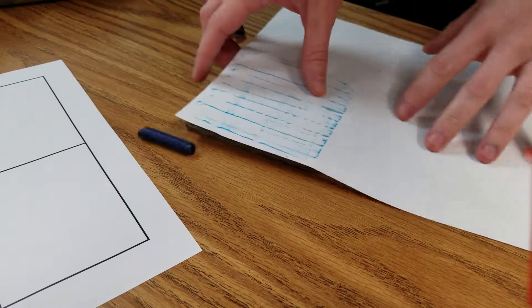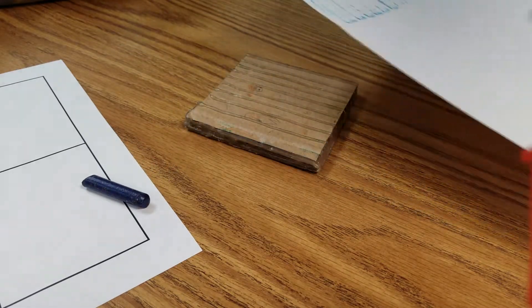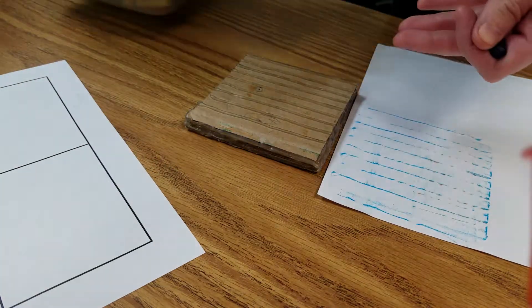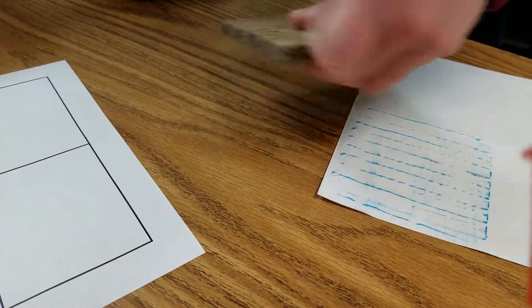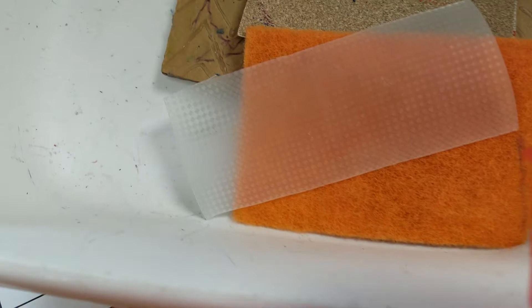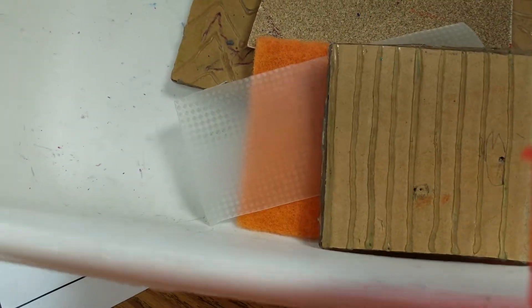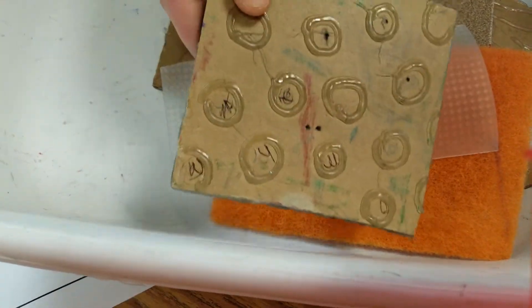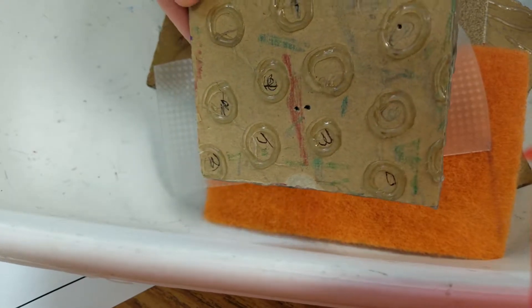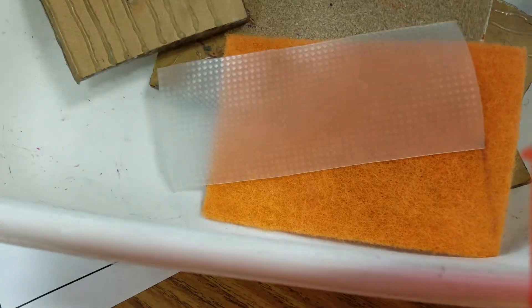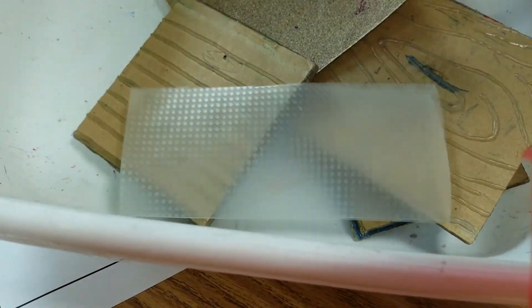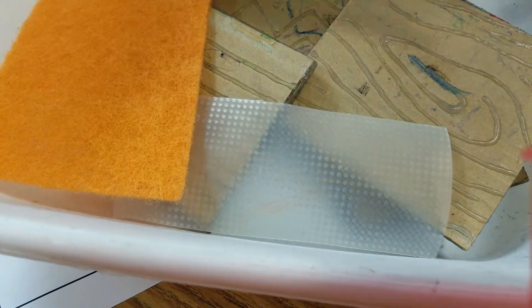Okay guys, we're going to be doing texture rubbings today. To do a texture rubbing, we're going to use copy paper, crayons, and every table will get a pan of different textures. I made some of these using cardboard and hot glue, and they're two-sided. Some of these are just random things like a sink scrubber for dishes, a piece of sandpaper, just whatever I could find that had a different texture.